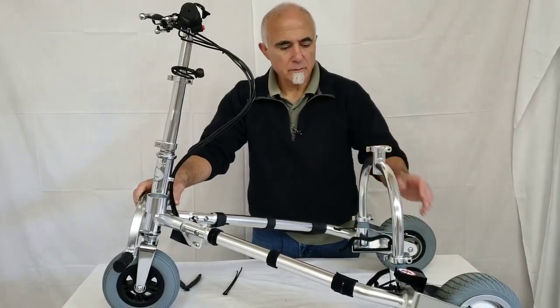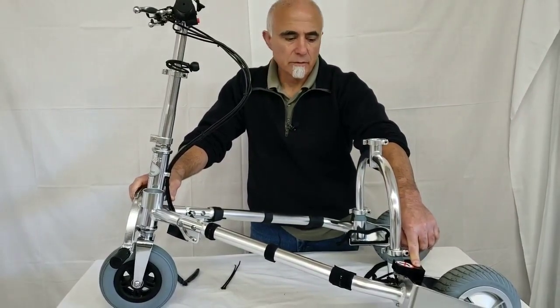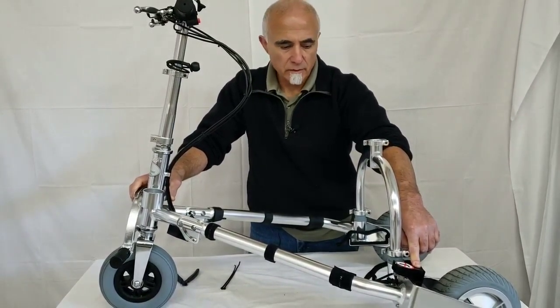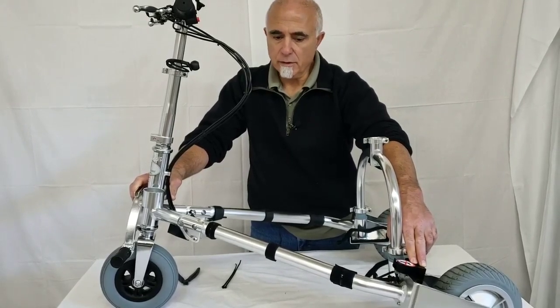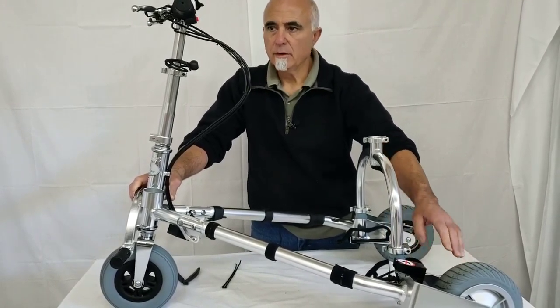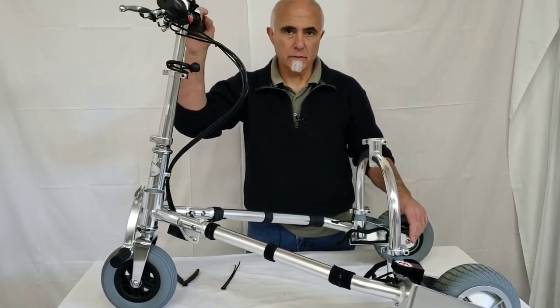Hi folks, this is Tony at TravelScoot again. Today I'm going to talk about removing and replacing the electronic controller, which is essentially the brains of the TravelScoot. It is the component that distributes your battery's electricity to the driveline, to the motor, to the on-off switch and the throttle, and conditions the signal for the throttle response, in other words, your speed.